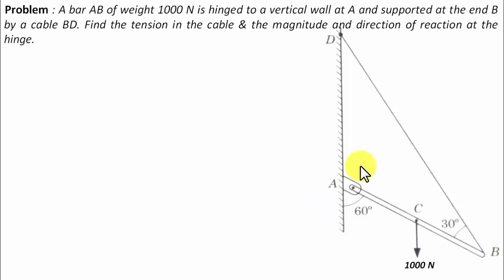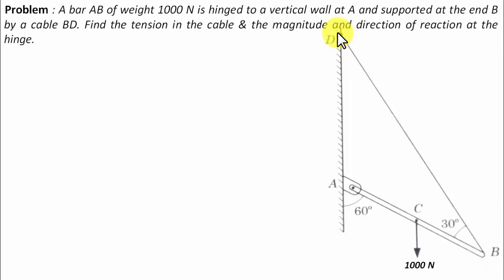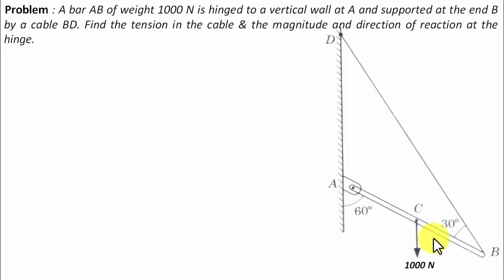Let me explain this entire arrangement. There is this bar AB which is hinged at A — this is the wall. There is cable BD: one end is attached at point B of the bar while the other end is attached at the wall for support. This cable makes an angle of 30 degrees with bar AB. The bar also has a self-weight of 1000 Newton acting centrally in the downward direction.